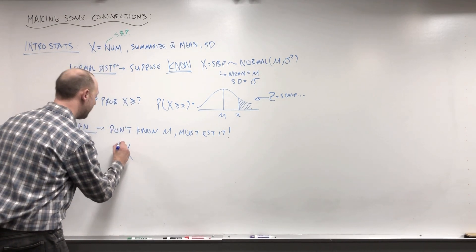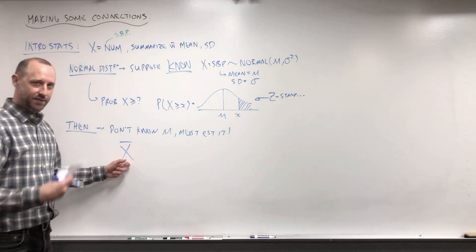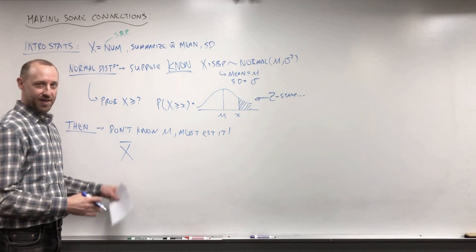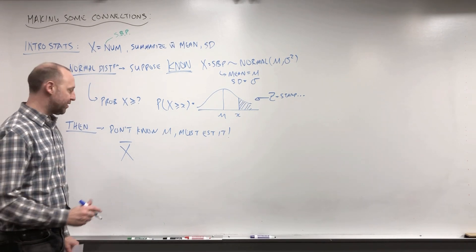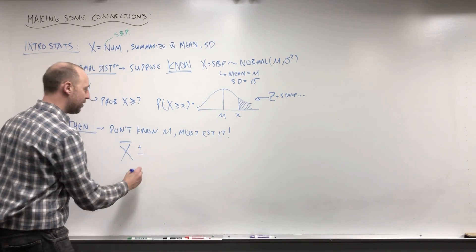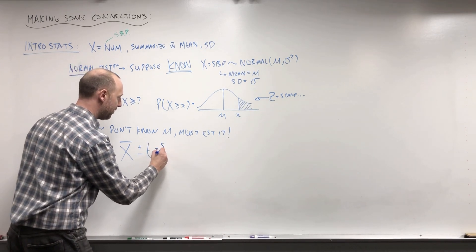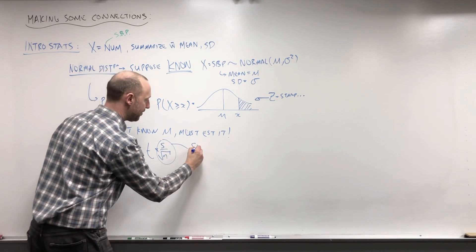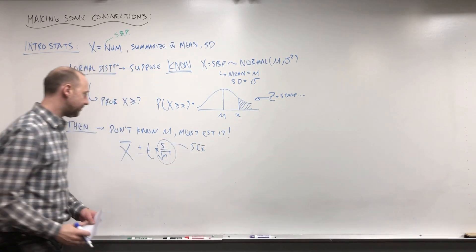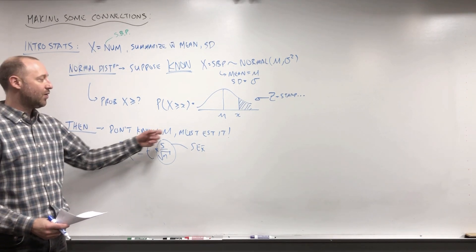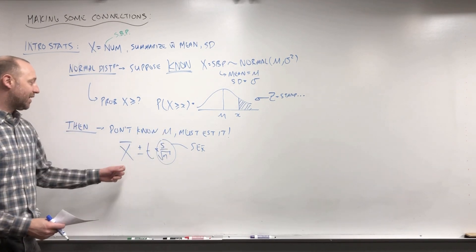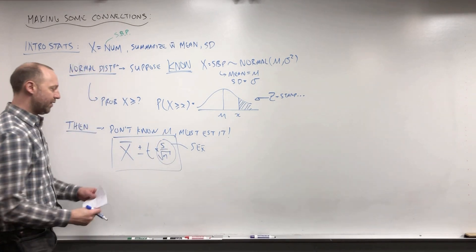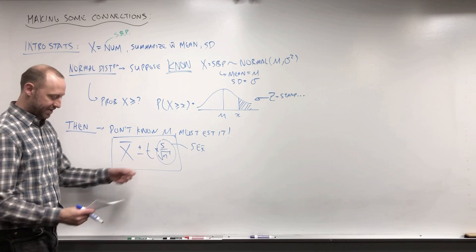And then you say we can estimate it with the sample mean - collect a sample of data and calculate the sample mean. And then you say, well, this is just an estimate. We might be over or underestimating the true value a bit. And you learn about tacking on a margin of error to that, this here being the standard error of the sample mean. So you learn, say, well, we don't know the mean, we have to estimate it. Here's some ways we can collect data. We can get an estimate, tack on a margin of error. We're pretty confident the true population mean is in here.